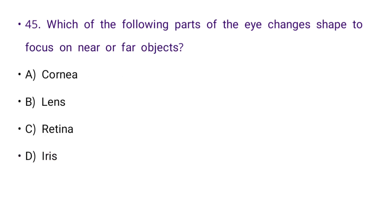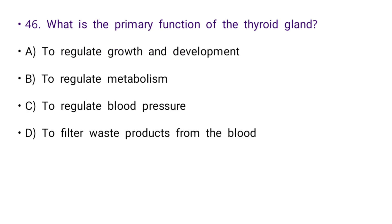Next: Which of the following parts of the eye changes shape to focus on near or far objects? Options: cornea, lens, retina, or iris. The right answer is B: lens.